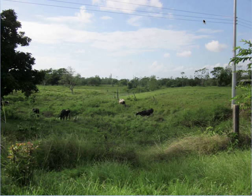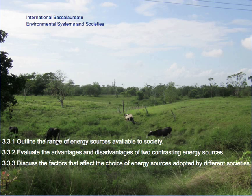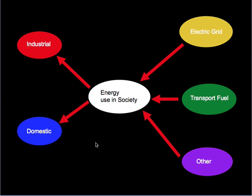In today's lesson we outline the range of energy sources available to society, we evaluate the advantages and disadvantages of two contrasting energy sources, and we discuss the factors that affect choice of energy sources adopted by different societies. Human society uses energy for two main purposes: industrial applications and domestic use.